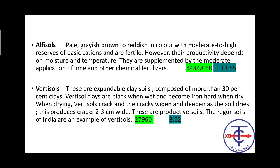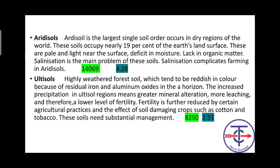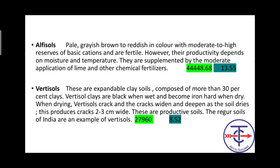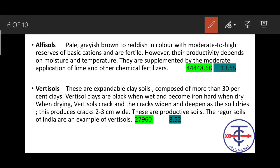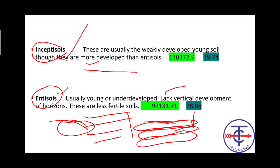The next one is Alfisol - again very important and interesting. Alfisol is pale grayish-brown to reddish in color, with moderate to high reserves of basic cations and are fertile. However, their productivity depends on moisture and temperature. They are supplemented by moderate application of lime and other chemical fertilizers. Alfisol covers about 28.08% of India's area.